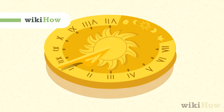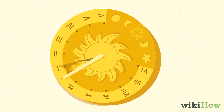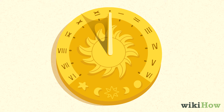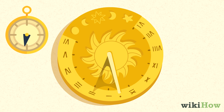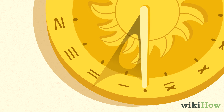To read a sundial, first place the sundial on a flat surface in a sunny spot. Rotate the sundial so the gnomon — the pin on the sundial that casts the shadow — is pointing north if you're in the northern hemisphere, or south if you're in the southern hemisphere.